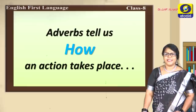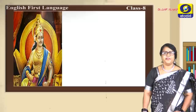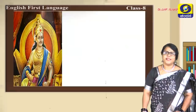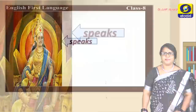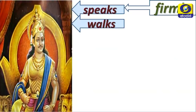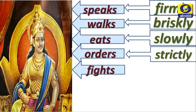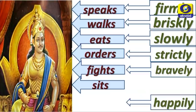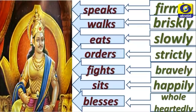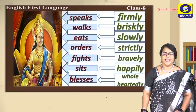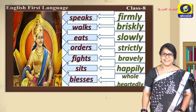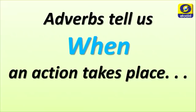Adverbs tell us how an action takes place. Here is a king: the king speaks firmly, he walks briskly, he eats slowly, he orders strictly, he fights bravely, he sits happily, he blesses wholeheartedly. These are adverbs. Let's see what else adverbs tell us: adverbs tell us when an action takes place.